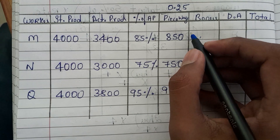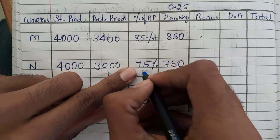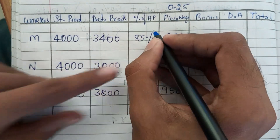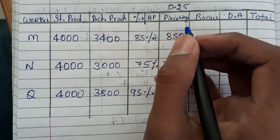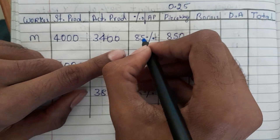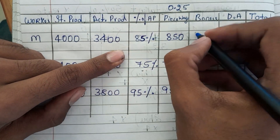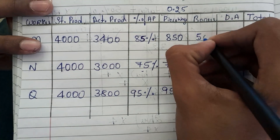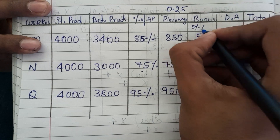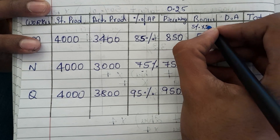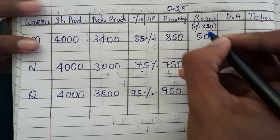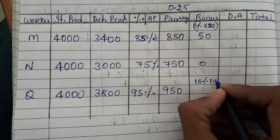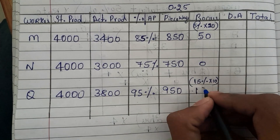Now for the bonus — they will get it only on production above 80 percent. N has achieved only 75 percent, so N will not get any bonus. M has achieved 85 percent, which is 5 percent more than 80 percent, so 5 into 10 equals 50 rupees bonus for M. Q has achieved 95 percent, which is 15 percent more than 80 percent, so 15 into 10 equals 150 rupees bonus for Q.